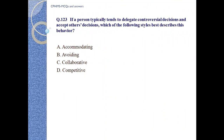Question number 123: If a person typically tends to delegate controversial decisions and accept other decisions, which of the following styles may describe his behaviour? A. accommodating. B. avoiding. C. collaborative. D. competitive.